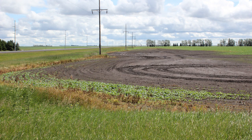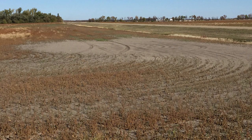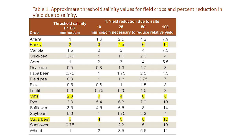One of the worst things we could do to these saline sodic areas is to plant a crop that will not do well there. Planting non-salt-tolerant crops on saline sodic areas will not only result in loss of revenue, but it will also make the salinity and sodicity issues worse. In some cases, that may also lead to heavy weed pressure.